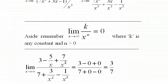And each one of these little rational functions here will go to zero as x goes to infinity. And I end up with 3 minus 0 plus 0 over 7 plus 0 minus 0, which equals 3/7.